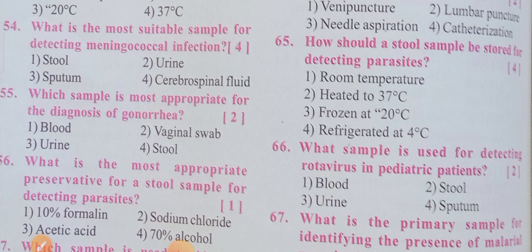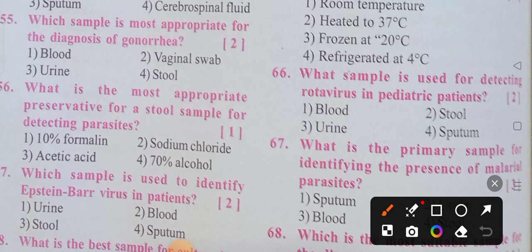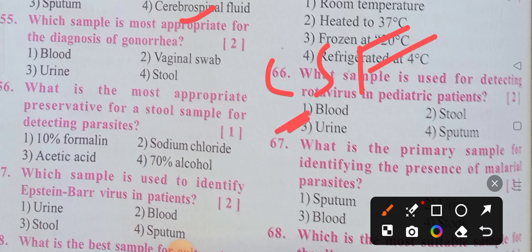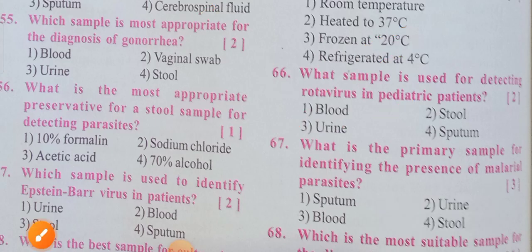What is the most suitable sample for detecting meningococcal infection? Option 4 is the correct answer: cerebrospinal fluid, CSF. CSF stands for cerebrospinal fluid and option 4 is the correct answer. Which sample is most appropriate for the diagnosis of gonorrhea?